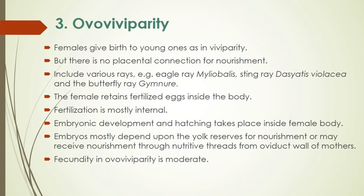The third mode of reproduction is ovoviviparity. In ovoviviparous organisms, females give direct birth to young ones as in viviparity, but there is no placental connection for nourishment. Ovoviviparous fishes include rays such as the eagle ray, stingray, butterfly ray, and some Gambusia species. The female retains fertilized eggs inside the body, and fertilization is mostly internal. Embryonic development and hatching take place inside the female body. The embryo mostly depends on yolk reserves for nourishment, or may receive nourishment through nutritive threads from the oviduct wall of the mother. Fecundity in ovoviviparity is moderate, intermediate between viviparity and oviparity.